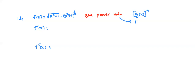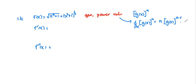Using the general power rule, recall the derivative of g(x) to the power n. The derivative of g to the power n would be n times g(x) to the power n minus one, multiplied by g prime. We use the same rule for our problem. In this case the power is one half and g is x squared plus one.